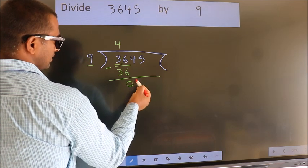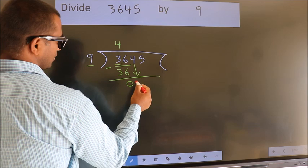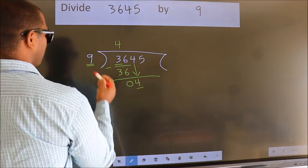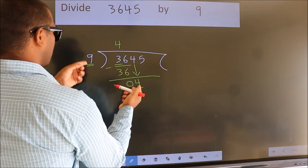After this, bring down the beside number. So 4 down. Here we have 4. Here 9. 4 is smaller than 9.